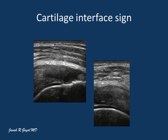Cartilage interface sign is another important sign usually seen during examination of the shoulder. It is a hyperechoic sign at the interface of the hyaline cartilage and liquid media. The cartilage interface sign is indicative of a fluid-filled space above the hyperechoic signal due to tendon tear.